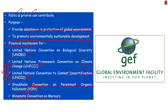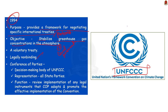Knowing about UNFCCC is very important. UNFCCC came into force in 1994. It is a framework for negotiating specific international treaties called protocols that aim to set binding limits on greenhouse gases. The objective of UNFCCC is to stabilize greenhouse gas concentrations in the atmosphere at a level that would prevent dangerous consequences. Remember, it is a voluntary treaty — not legally binding. The treaty itself sets no binding limits on greenhouse gas emissions for individual countries. But if a protocol is made as a result of a UNFCCC COP, then it is legally binding.